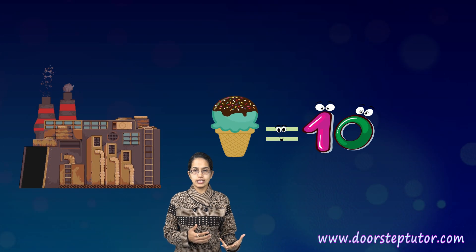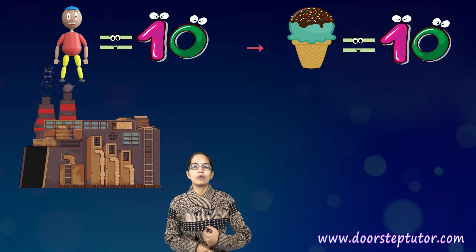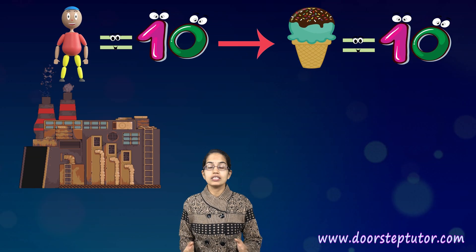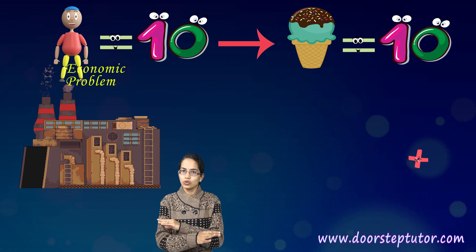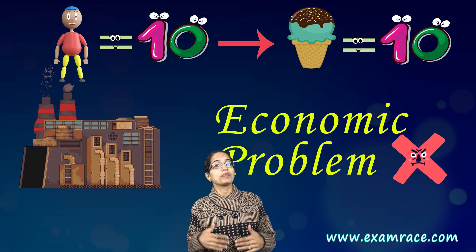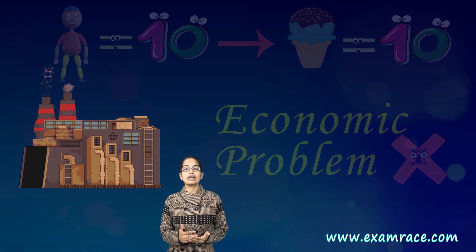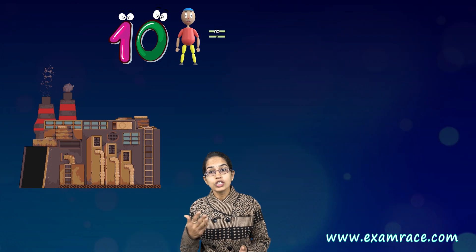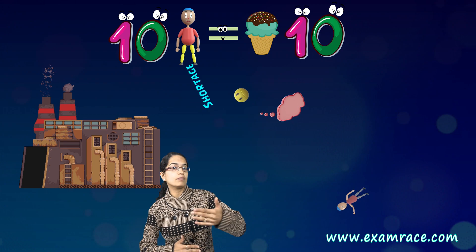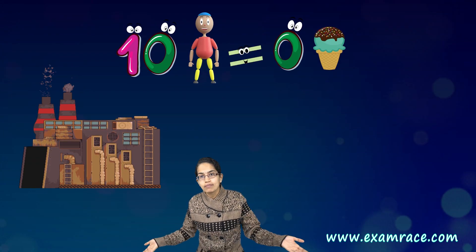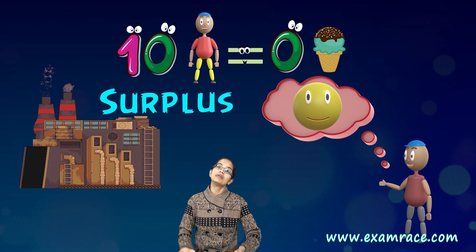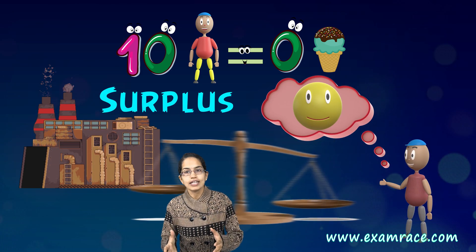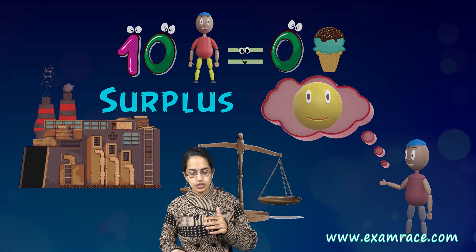Let's say I have a factory and I produce 10 ice creams, and there are 10 people each looking for one ice cream — there is no economic problem in this scenario. But on the other hand, there can be a scenario where there are 10 people each looking for 10 ice creams, so I am running short. Or there are 10 people and none of them need an ice cream, so I am in surplus — and there is an imbalance that comes into play.